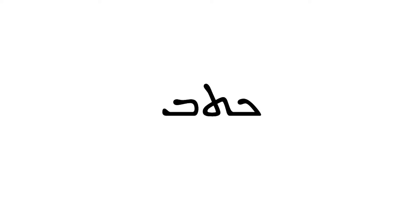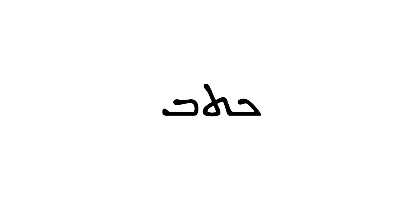Let's take a look at the verb kathav, which in the pa'al means 'to write.' The verb kathav is made up of three root consonants: kaf, tau, and baith. The first example is the verb kathavton, which means 'you wrote,' addressed to a group of men or a mixed group. At the beginning of the word we see those three root consonants — kaf, tau, and baith — and the suffix at the end tells us it's in the perfect tense, second masculine plural.